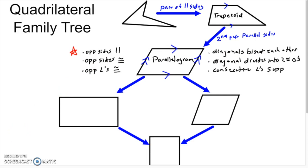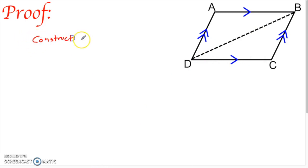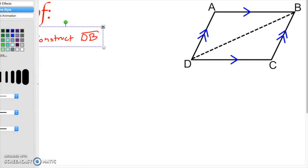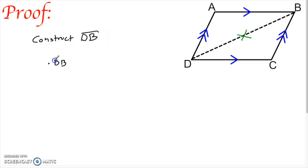We're going to sketch these proofs out — not a full two-column proof. Let's first tackle the diagonal dividing the parallelogram into two congruent triangles. I'll pick either diagonal and construct DB. When I do that, the parallelogram turns into two triangles, and we just need to show those triangles are congruent. We've got a reflexive piece right there — diagonal DB is congruent to itself.